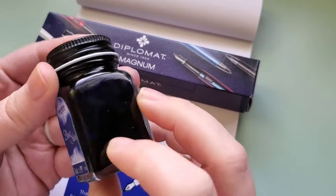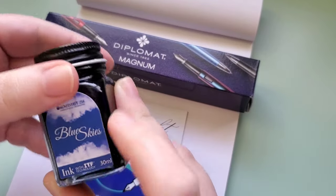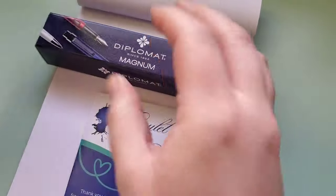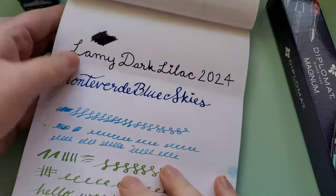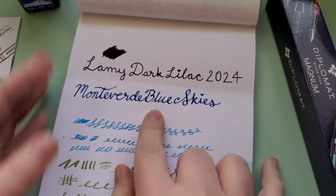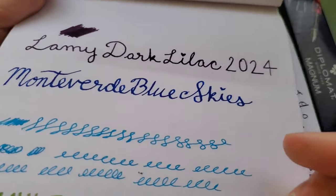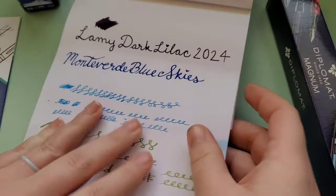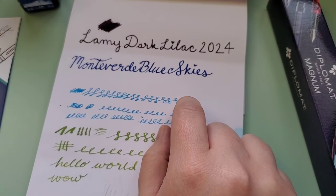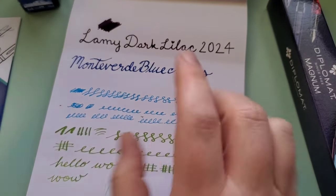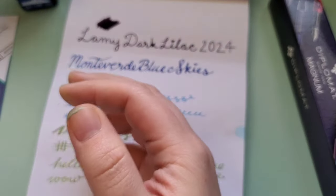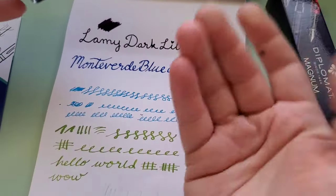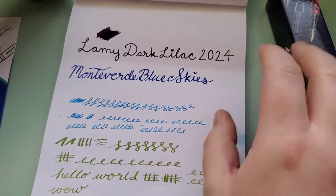I do have a 30ml bottle of Blue Skies, which I did sample out already. So that looks like this, it's a pretty typical royal blue. It is not all that different from TWSBI Midnight Blue. I liked it, it writes nicely.